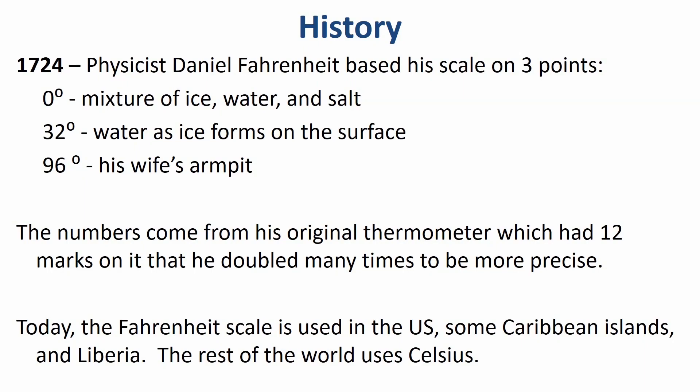Some backstory. In 1724, Daniel Fahrenheit bases his scale on three points. He calls the mixture of ice water and salt zero, makes ice 32, and his wife's armpit 96. If you've ever wondered why our body temperature is 98.6, there you go. Why did he use those weird numbers — why not a hundred or ten? It turns out his original thermometer had 12 marks, then he made one that was more precise with 24 marks, then one doubly precise with 48, and doubled again to 96.